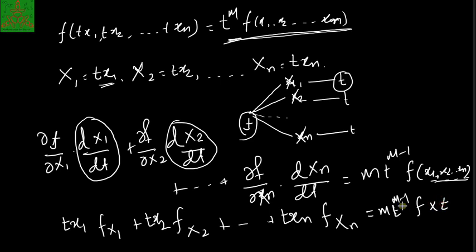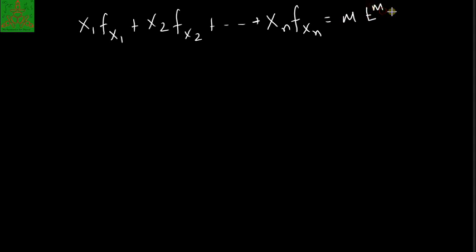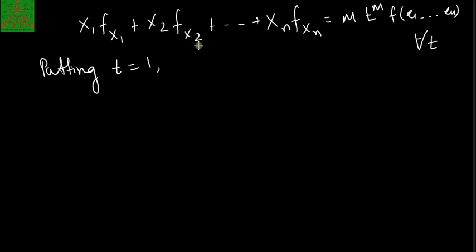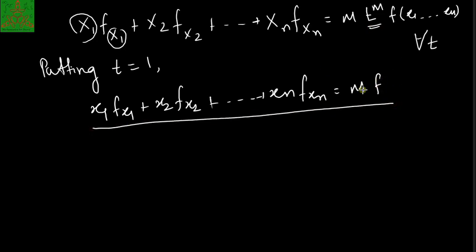Now multiplying both sides by t, and substituting the values of X1, X2, ..., Xn, we get: X1·fX1 + X2·fX2 + ... + Xn·fXn = m·t^m·f(x1, x2, ..., xn). This expression is true for every t. In particular, setting t = 1, capital Xi converts to small xi, and we get: x1·fx1 + x2·fx2 + ... + xn·fxn = m·f. That completes the proof of the forward direction.